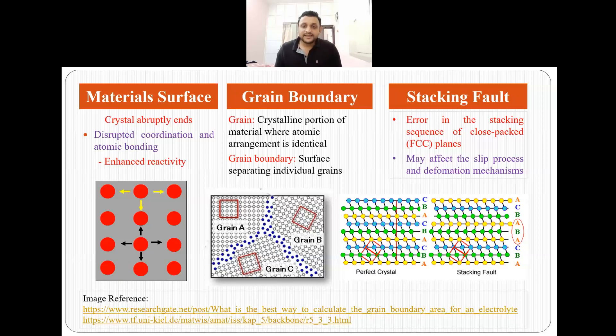Now the second type of surface defect is grain boundary. We know that grains are those portions in the material which are crystalline and here in one particular grain the atomic arrangement is identical. So let's take this example. Here we have three grains: Grain A, grain B and grain C.